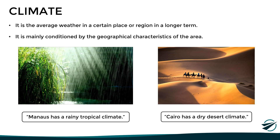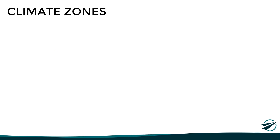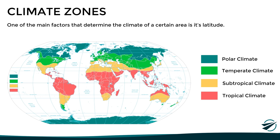Weather refers to the specific atmospheric conditions at a given time and place, while climate refers to the typical or average atmospheric conditions of that place in the long term. One of the factors that significantly determines the climate in a certain region is its latitude. As we can see in this map, the Earth has different climate zones depending mainly on how far or close they are to the equator. Areas closest to the equator are warm and humid, while areas closest to the poles are much colder and drier.